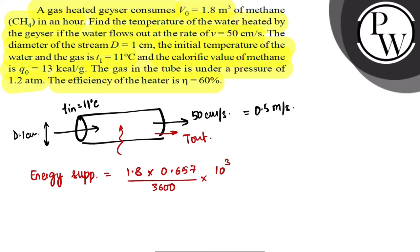And the calorific value is 13 kcal, 13 × 10³ calories per gram. This is why it is converted. So this is energy supply.